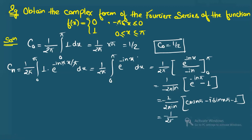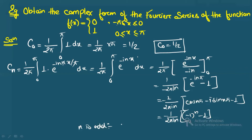Since cos(nπ) = (−1)ⁿ, we have cₙ = (1/(−2πin))[(−1)ⁿ − 1]. When n is odd, (−1)ⁿ = −1, so the bracket gives −2, and cₙ = 1/(πin). When n is even, (−1)ⁿ = 1 and the bracket is 0, so cₙ = 0 for even n.